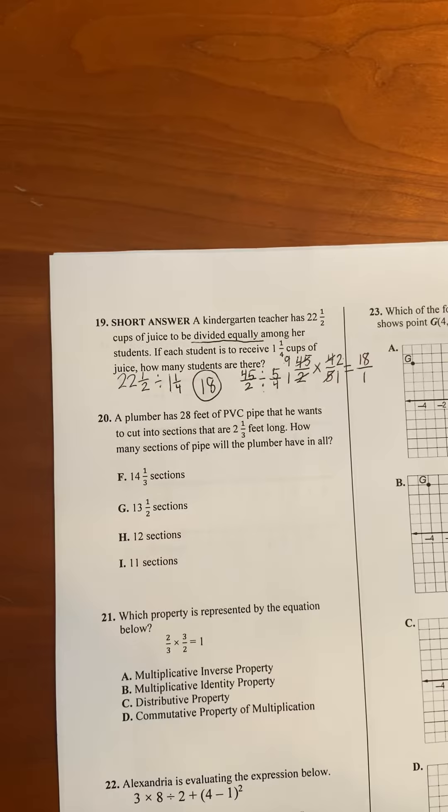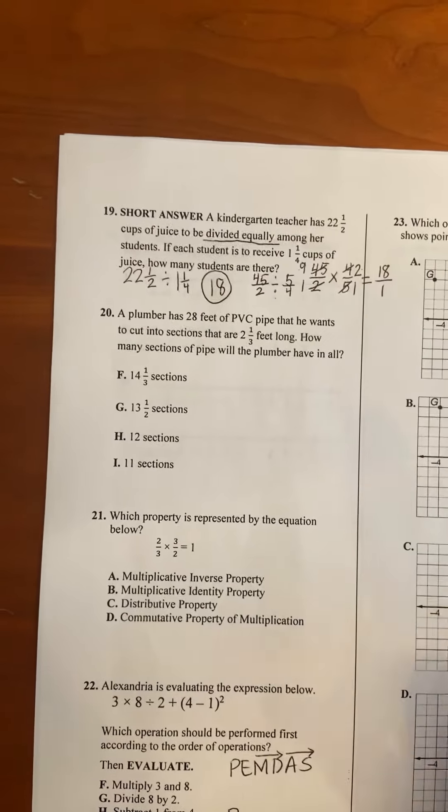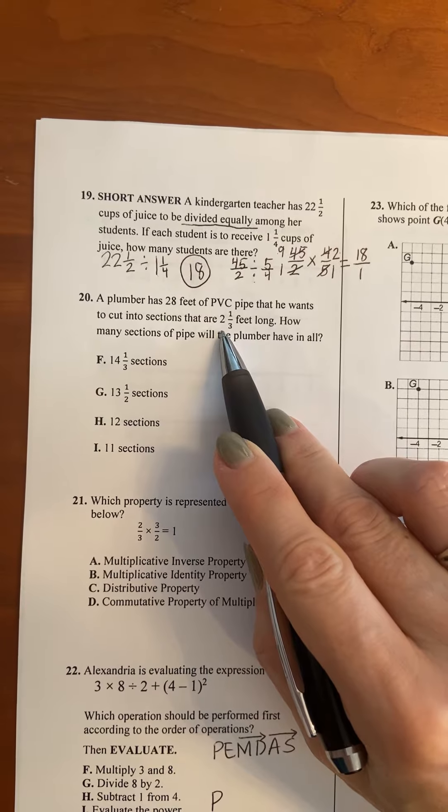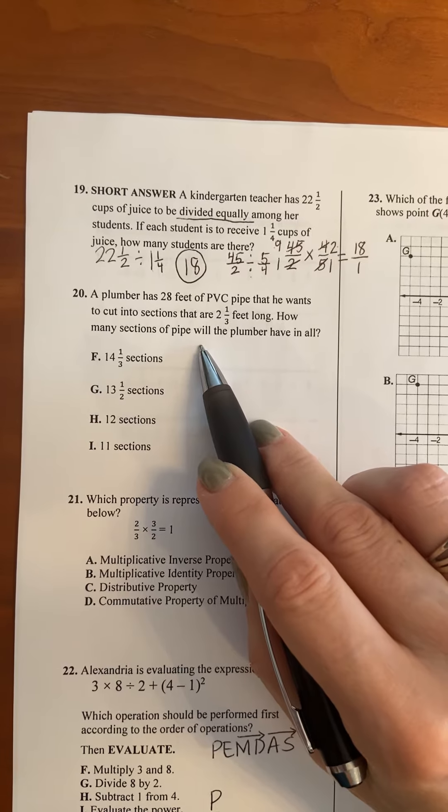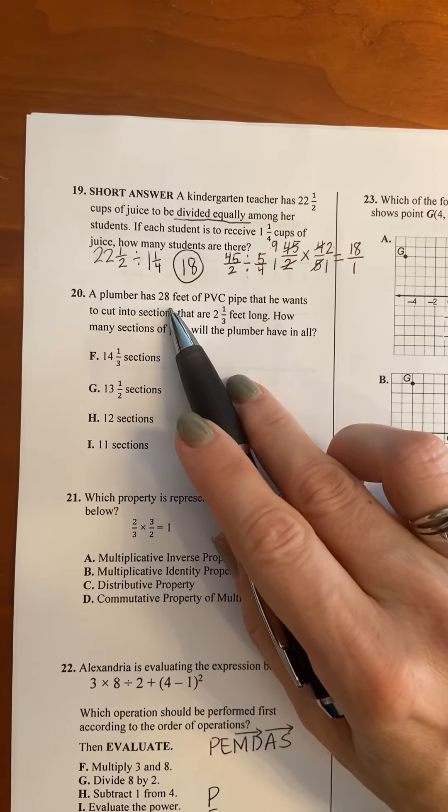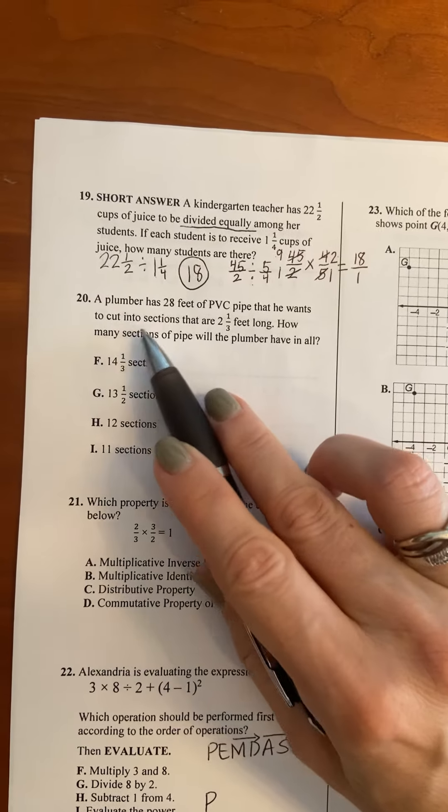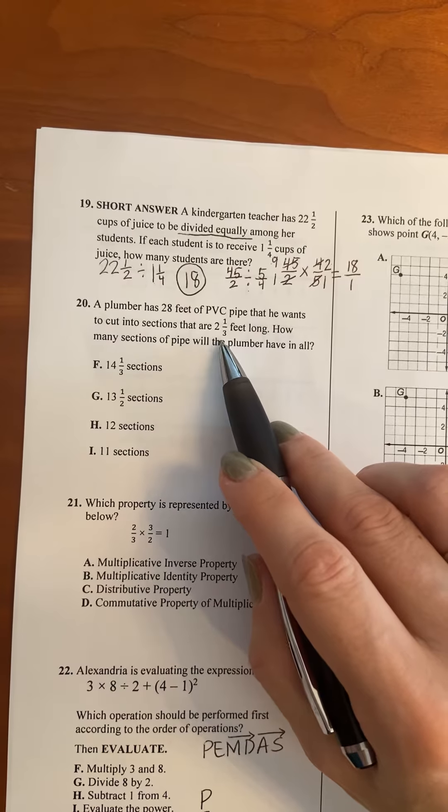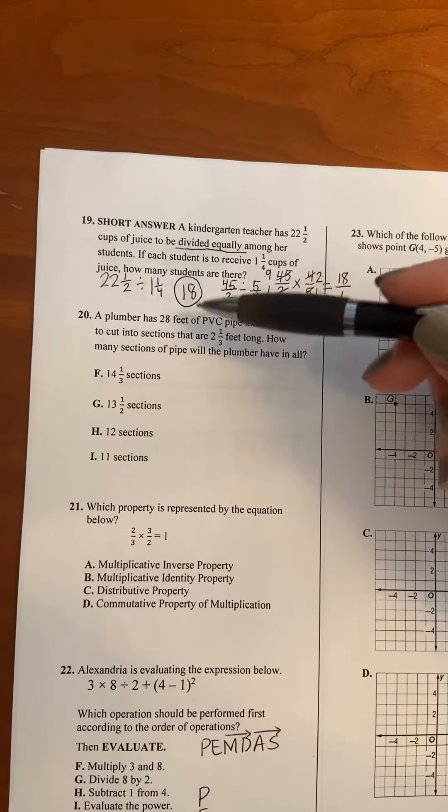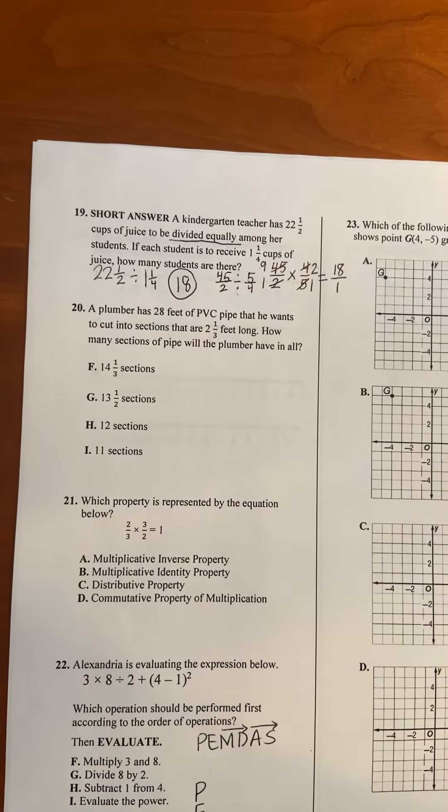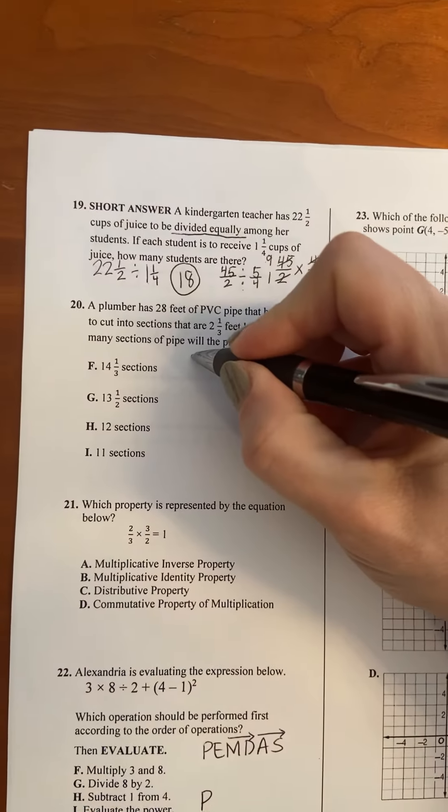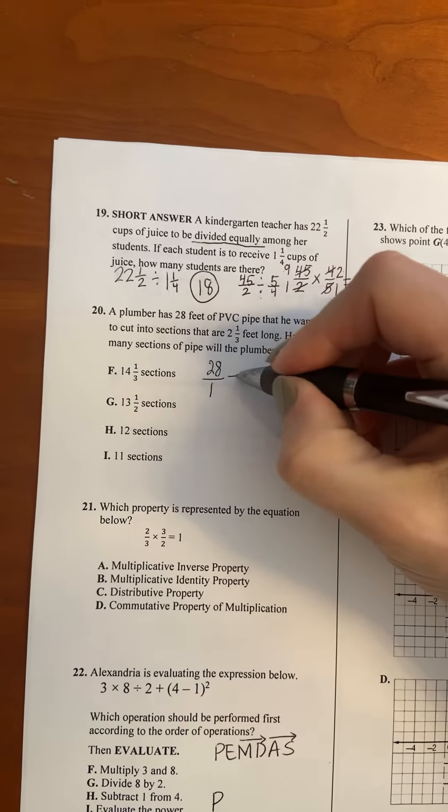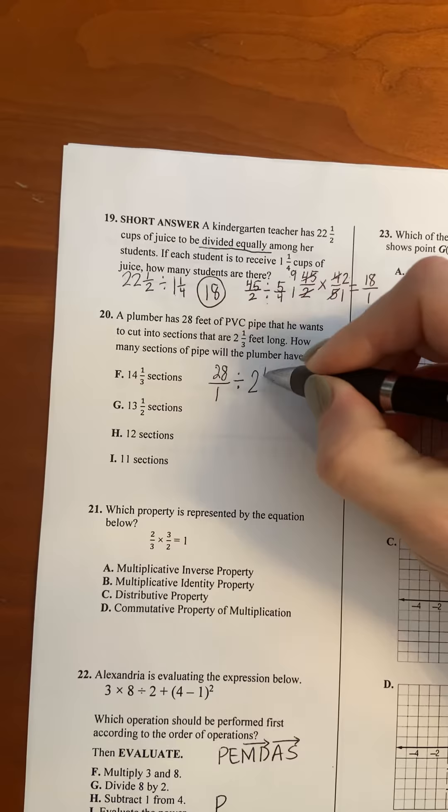For number 20, a plumber has 28 feet of PVC pipe that he wants to cut into sections that are 2 and a third feet long. How many sections of pipe will the plumber have? Well, if you think about it, you've got 28 feet of pipe, so this big long piece of pipe, and you want to cut it into sections that are 2 and a third. So we're going to cut into sections or split into sections that are all the same length. So we're taking 28 feet, splitting it into equal pieces of 2 and a third, and so that should tell you that the operation is division. So 28 feet, and I'm going to put the 1 under there since I'm working with fractions, divided into equal pieces of 2 and one third.